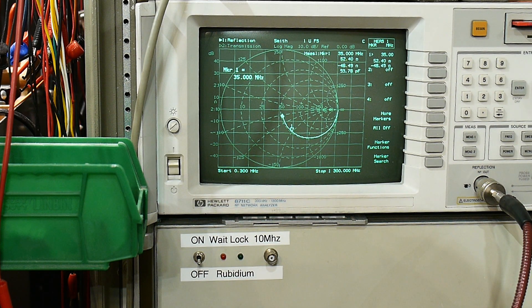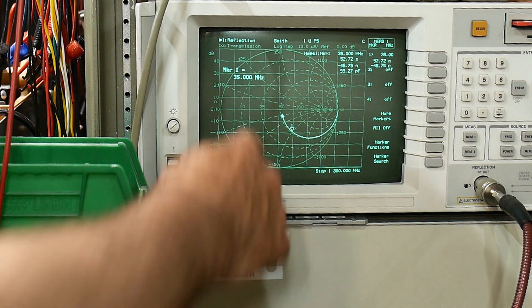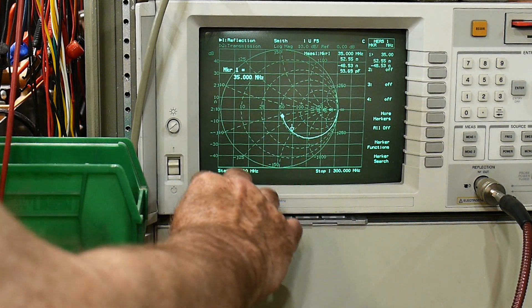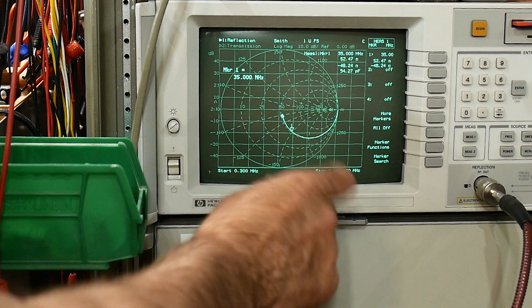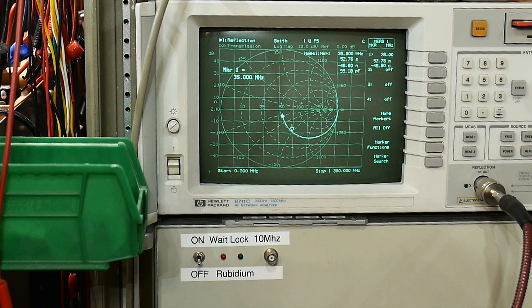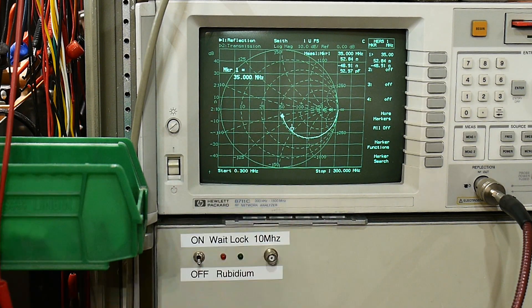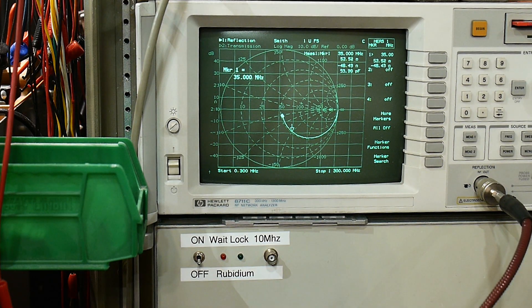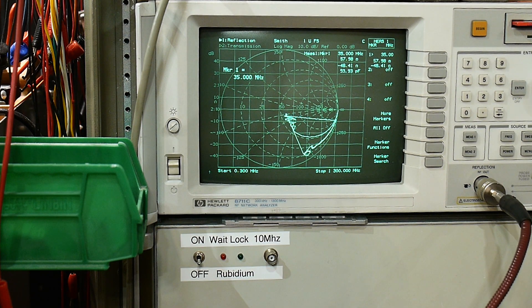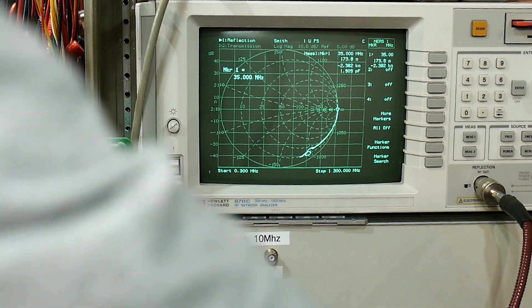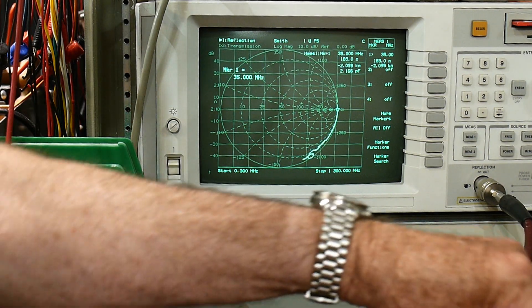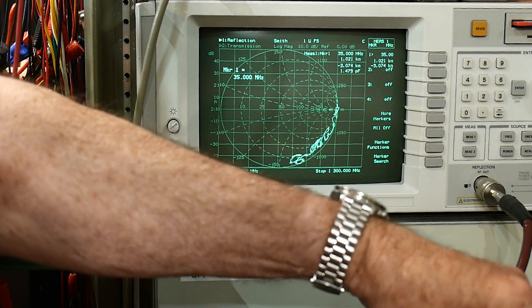That's one way of measuring picofarads - to have a series circuit with a 50-ohm resistor. The capacitor is in series with 50 ohms and we're measuring sort of here in the middle of the chart. Now the other way you can do this, let me change it.